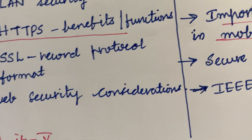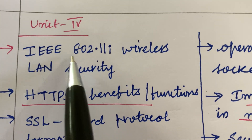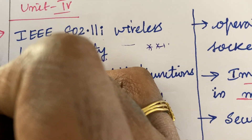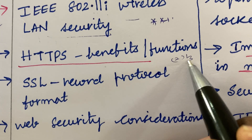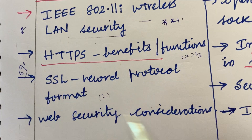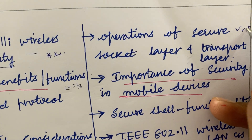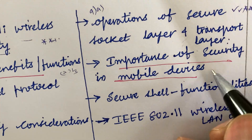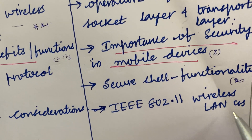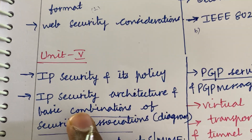Make sure to work out all these concepts. It is not easy to score good marks this time as you are supposed to master each and every topic highlighted here, since the question paper pattern is quite lengthy. Unit 4 is all about IEEE 802.11i wireless LAN security — said to be a very important and certain question expected in the 8th question. HTTPS benefits and functions may be a 2 or 3-mark question. SSL record protocol format is a 2-mark question, and web security considerations too — these are 8A and 8B questions. The operations of SSL and transport layer security are very important, and IEEE 802.11 wireless LAN explained in detail may be a 9A or 9B question.